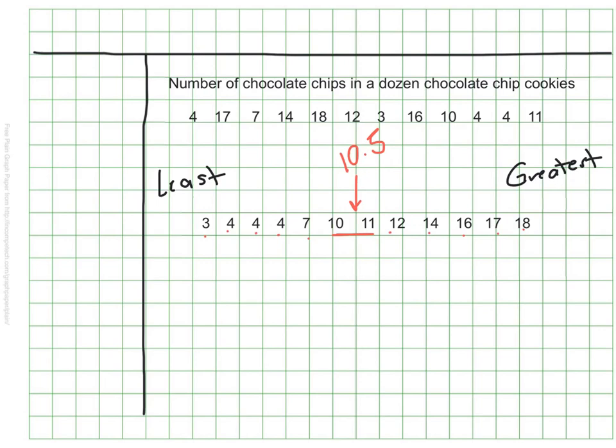What does this tell me? Well, it tells me that 50% or half of the cookies have 10 and a half or more chocolate chips per cookie. That sounds great. It means that if I choose a cookie at random, I have a 50% chance of getting a cookie with lots of chips. I guess it also means that I have a 50% chance of getting a cookie with fewer than 10 and a half chips. So far, I only have two groups. Quartiles need four, right? So let's keep going.